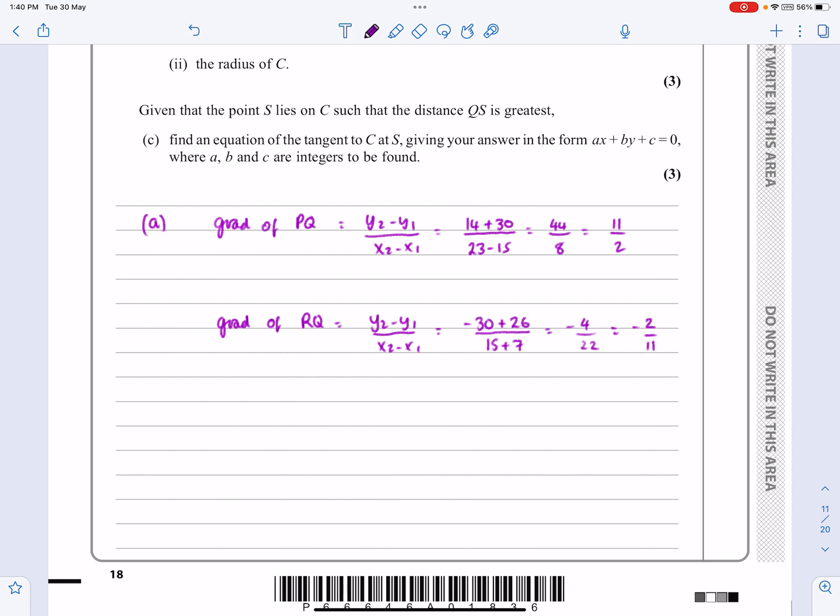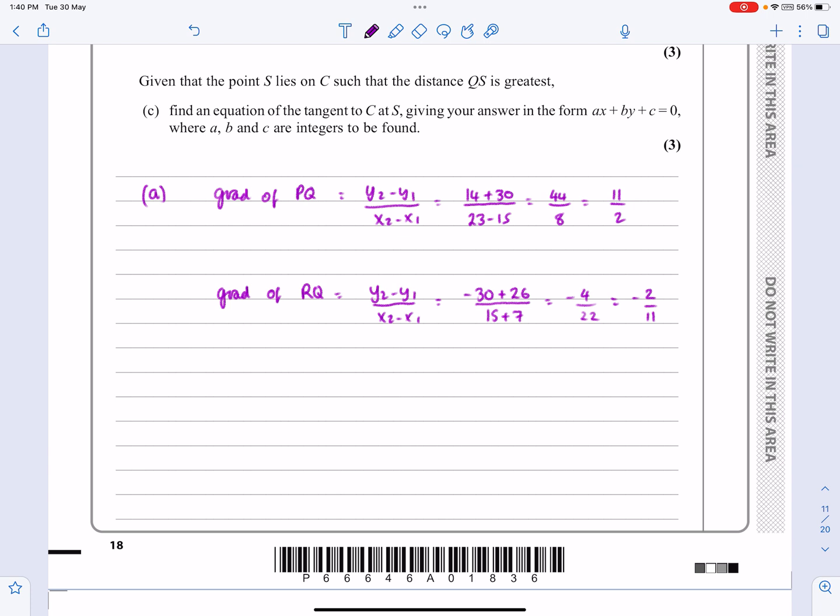So yeah, one of them is minus 1 over the other one. Because I'm doing this as a proof, I'm actually going to say since gradient PQ multiplied by gradient RQ equals 11 over 2 times minus 2 over 11 equals minus 1, therefore perpendicular. And so in other words, PQR equals 90 degrees. This fact here is the same as that one is minus 1 over that one, just a more formal version of it. So, quite happy with that for part A.